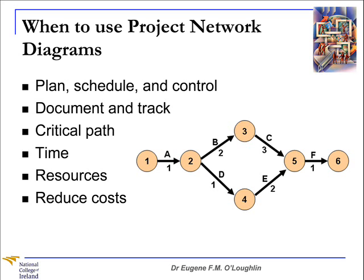These types of diagrams can help us document and track a complex project, whether it's an existing or planned project. And they can also help us designate what's called a critical path, which I'll come back to in a few moments, and show other interrelationships between activities. We can also use these network diagrams to ensure time and resource management, and they can help us reduce project costs through coordination and communication. So if we can do all this with something as simple as a project network diagram, we will indeed have quite a powerful tool to help us with our project.